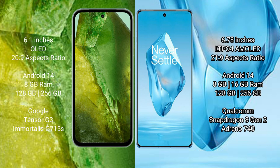OnePlus 12 Power comes with 8GB to 16GB RAM and 128GB to 512GB internal storage, powered by the Qualcomm Snapdragon 8 Gen 2 processor with an Adreno 740 GPU.